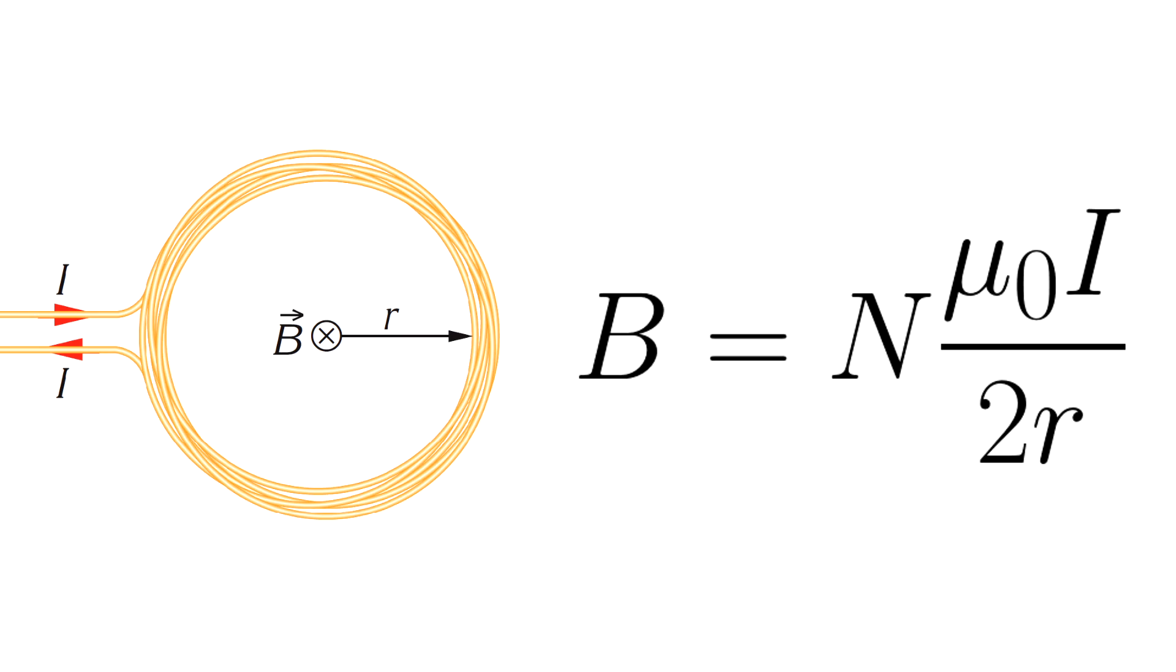For such a coil, the magnetic field at the center of the circular loop is given by this equation. In this equation N means number of turns, μ0 is the permeability of free space, I is the current through the coil and R is the radius.